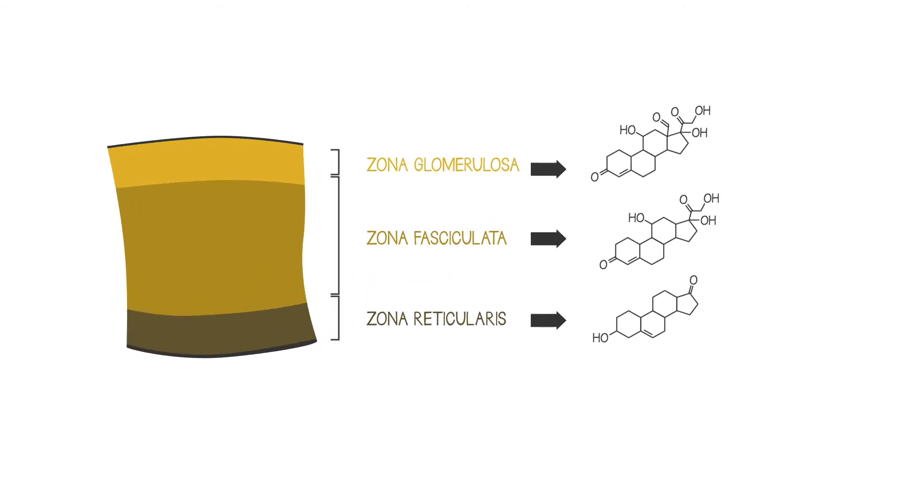Each produces a different type of steroid hormone, although they are all related. The term corticosteroid is sometimes used to refer to the most important hormones coming from the adrenal cortex, which are those from the outer two layers.